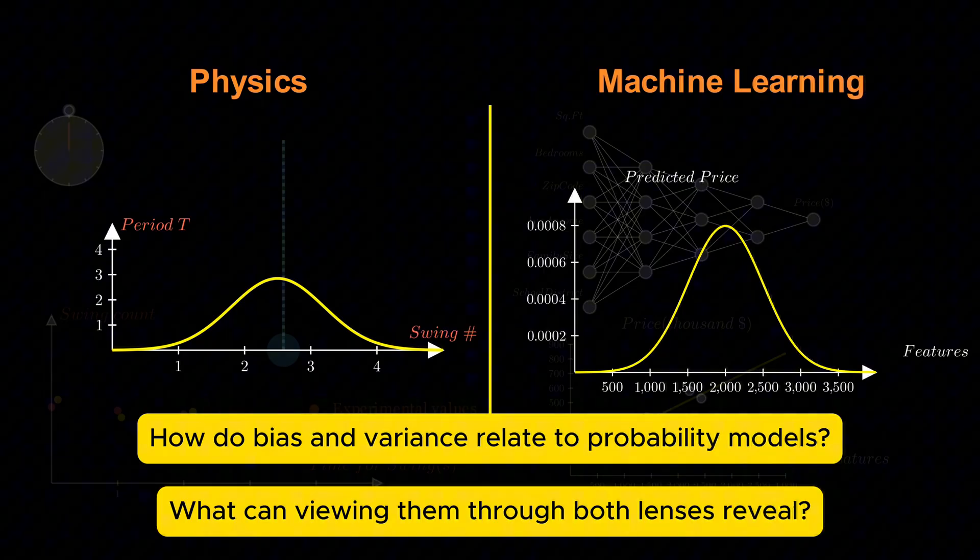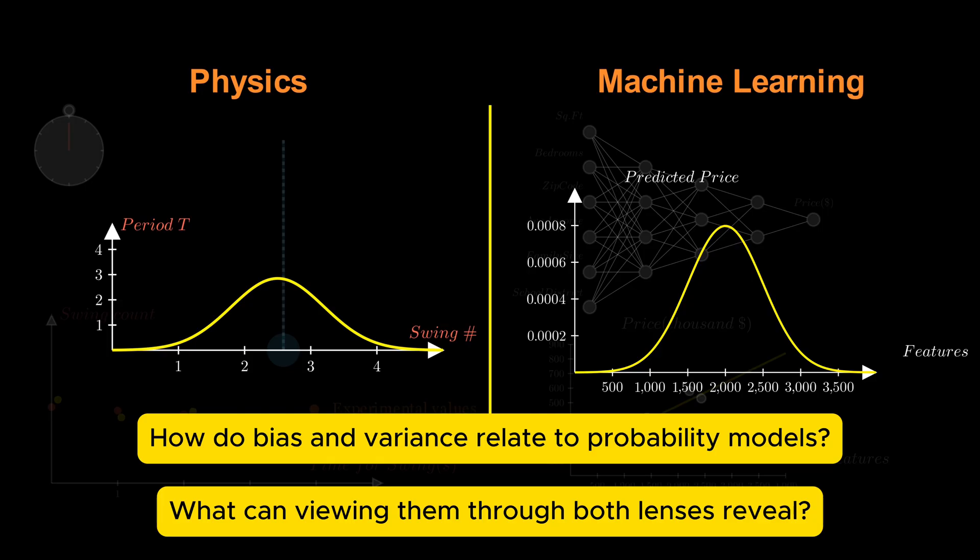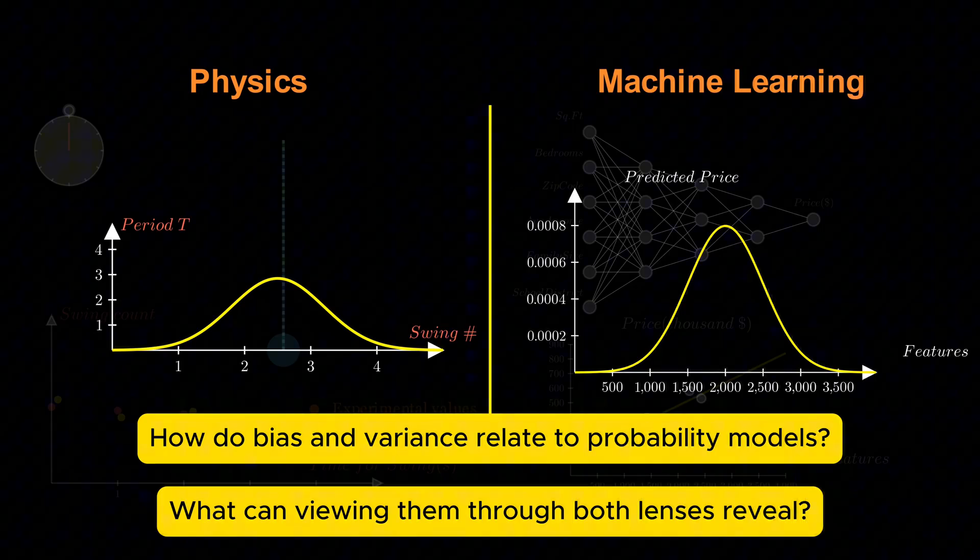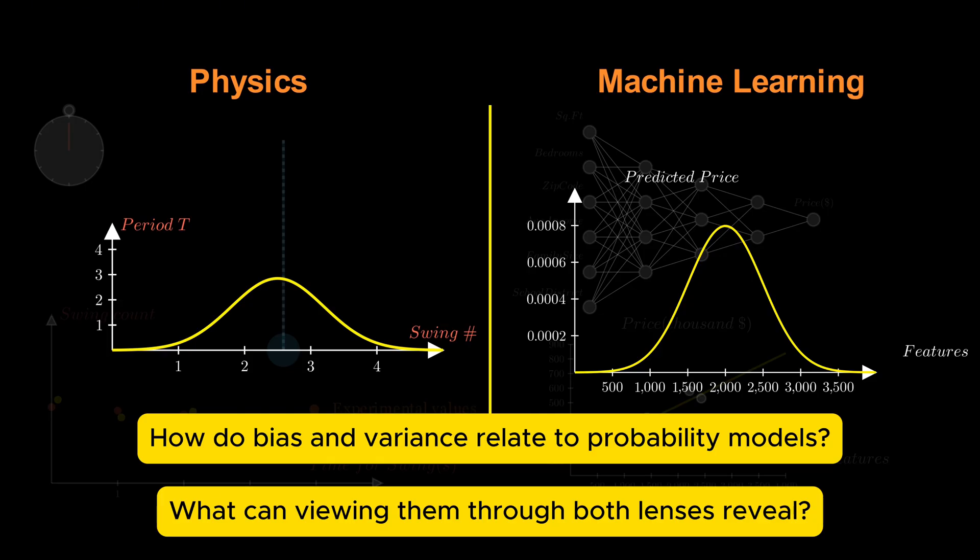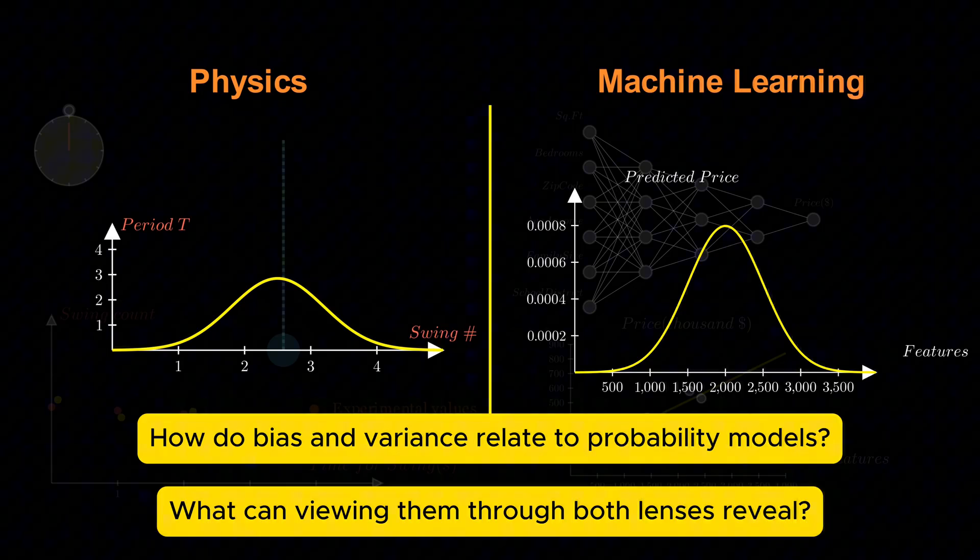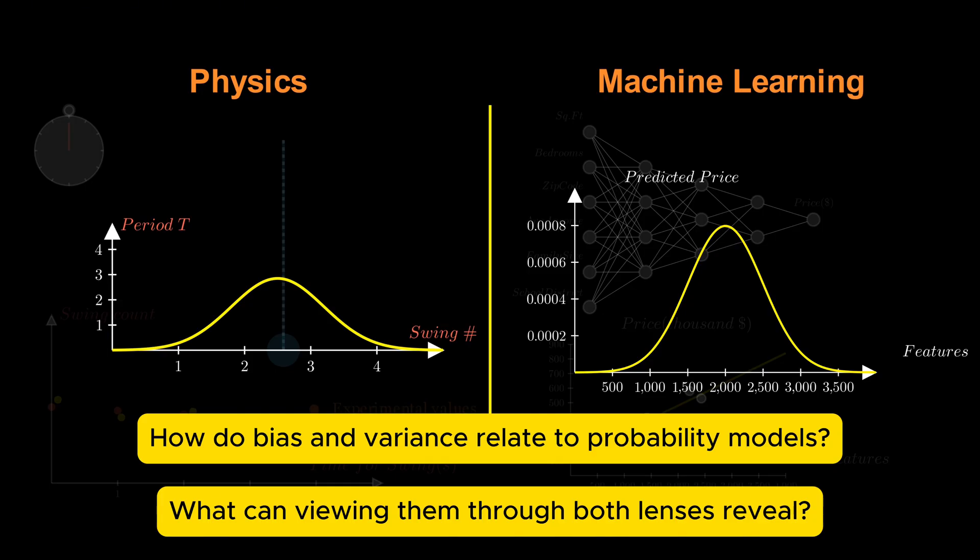Because by the end of this video, you'll not only understand bias and variance mathematically, but you'll also see them as two sides of the same coin, whether you're measuring the period of a pendulum or training a neural network.